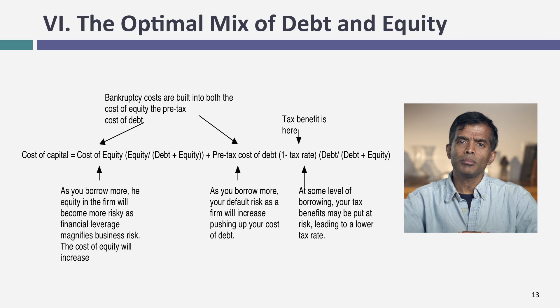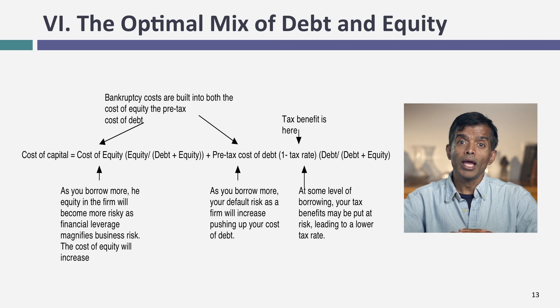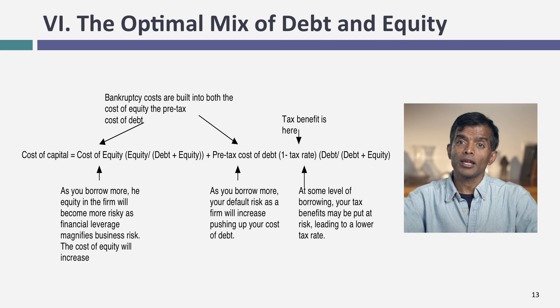We converted this into a number using the cost of capital. By changing the mix of debt and equity and looking at what will happen to the cost of capital, we could answer the question of what the right mix of debt and equity is for a company. As your debt ratio changes, you have to change your cost of equity — we did it using a levered beta. And as debt changes, you should be changing your cost of debt — we did that using a synthetic rating. We were able to come up with the right mix of debt and equity for a variety of companies, ranging from Disney to a private business.